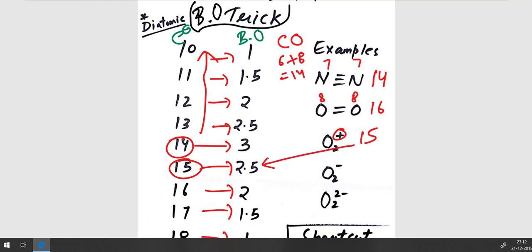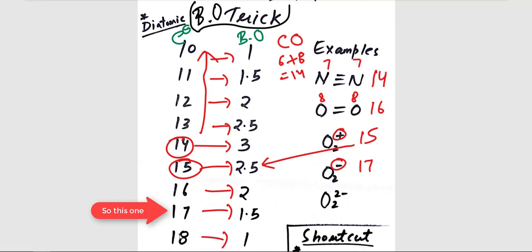Similarly for O2-, since there is a negative sign, single negative will correspond to 1 plus electron. And so we have 17 electrons. And for 17 electrons, we can clearly see that the bond order will be 1.5.